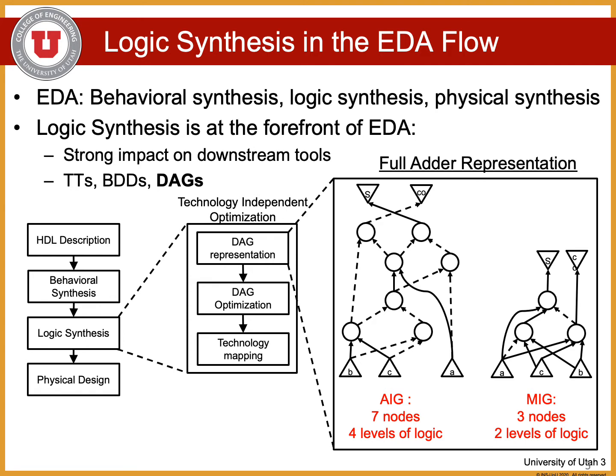The EDA toolchain is complex, but at a high level it can be divided into three steps: behavioral synthesis, logic synthesis, and physical synthesis. Logic synthesis is the conversion of a design from an RTL level to a gate level implementation. Because all subsequent steps use this gate level implementation, it's a very important part of the EDA flow with a strong impact on the performance of downstream tools. There are a variety of techniques that can be used for logic synthesis, including manipulation of truth tables, binary decision diagrams, and directed acyclic graphs.